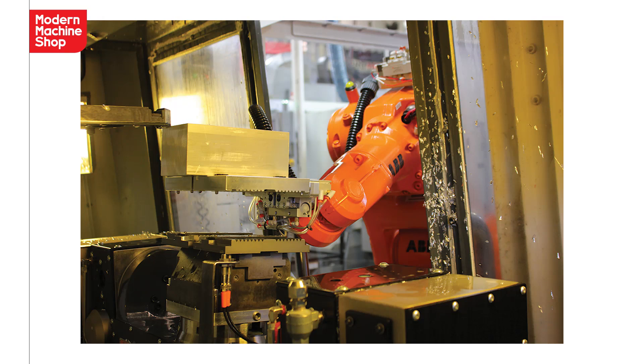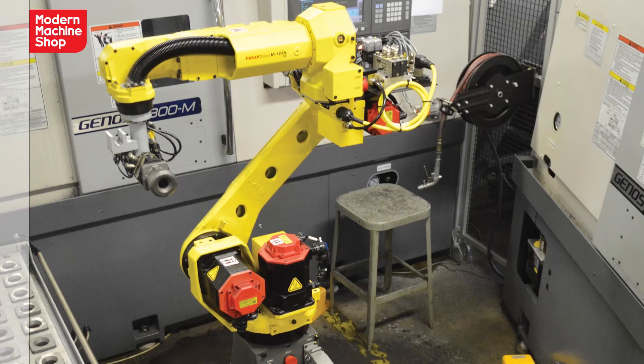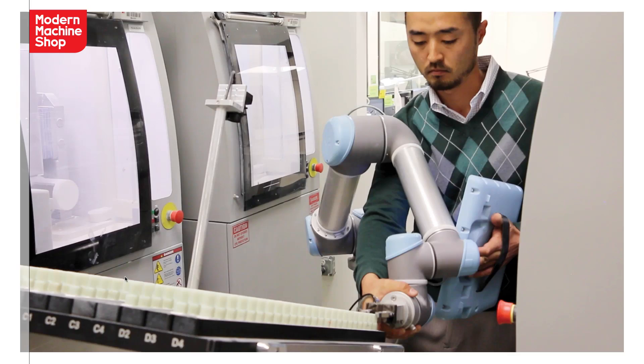Robotic technology has come a long way recently. These days, they're easier to integrate, easier to program, and they have improved sensing capabilities. Recent developments include collaborative robots. These are robots that can work safely alongside humans. They're also easier to deploy in other areas of the shop so you can get better use out of them.